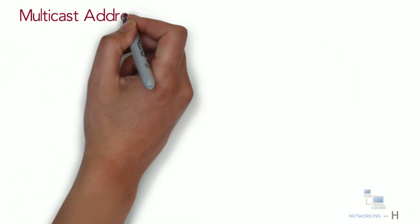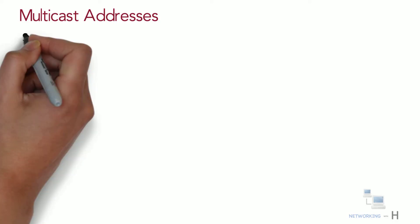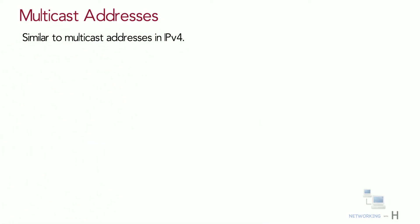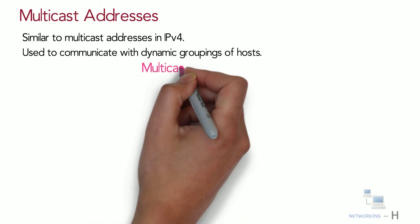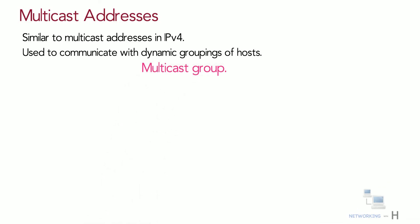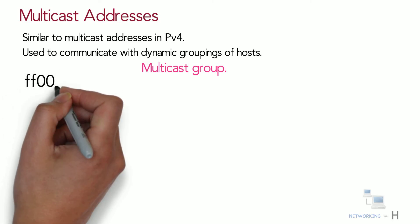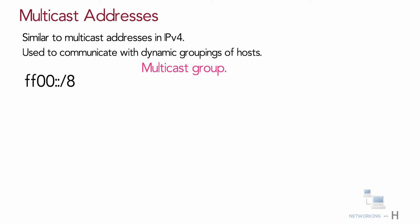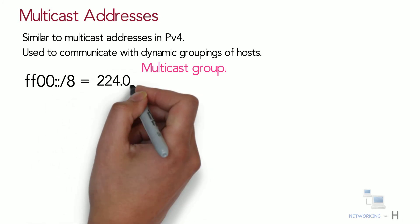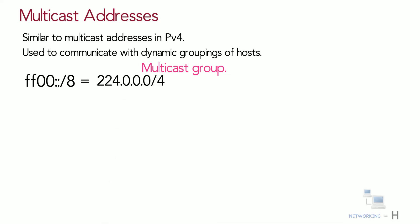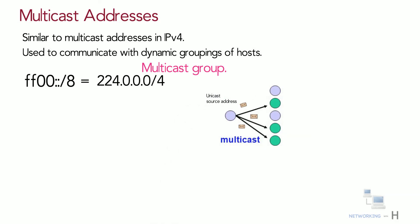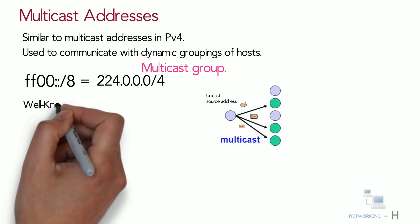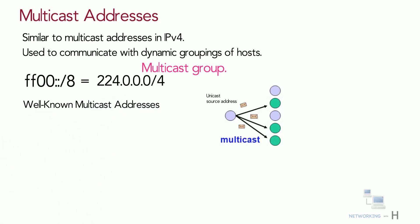The next category is multicast address in IPv6, which is similar to multicast in IPv4. They are used to communicate with dynamic groupings of hosts. An IPv6 multicast address defines a group of devices known as a multicast group. IPv6 multicast addresses use the prefix FF00::/8, which is equivalent to the IPv4 multicast address 224.0.0.0/4. A packet sent to a multicast group always has a unicast source address, and a multicast address can never be the source address. Unlike IPv4, there is no broadcast address in IPv6.